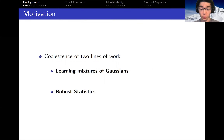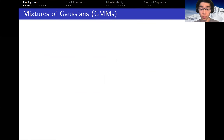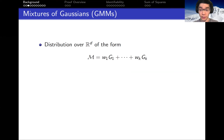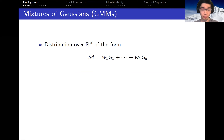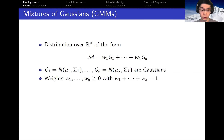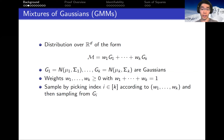Let me say a little bit about learning mixtures of Gaussians. A mixture of Gaussians is a distribution of the form shown, where we have mixing weights w1 through wk and component Gaussians g1 through gk. The Gaussians each have their own means and covariances, and the mixing weights are non-negative and sum to 1. To draw a sample from the mixture m, we sample an index according to the mixing weights, and then draw a sample from the corresponding component.